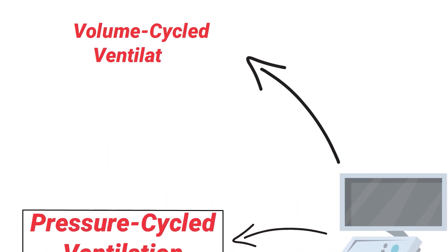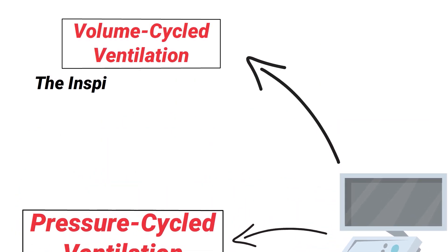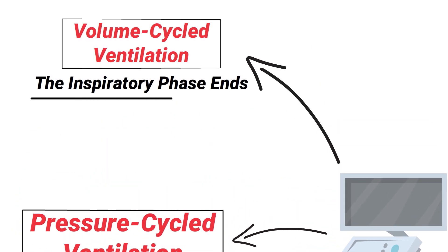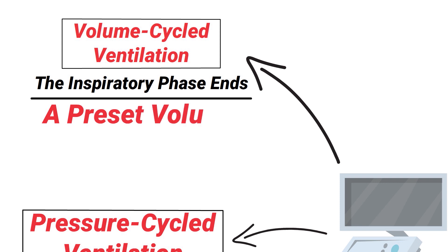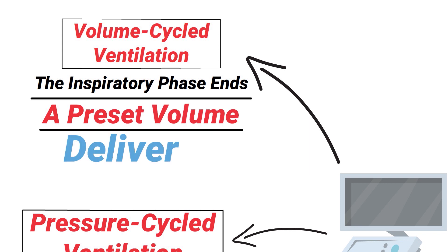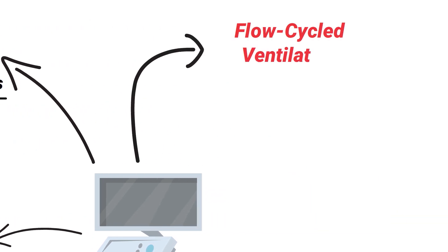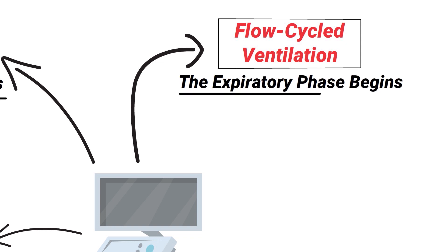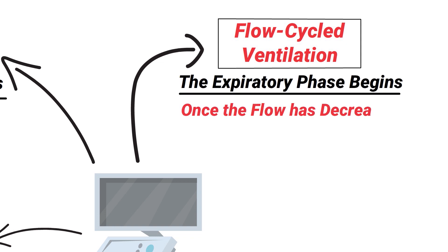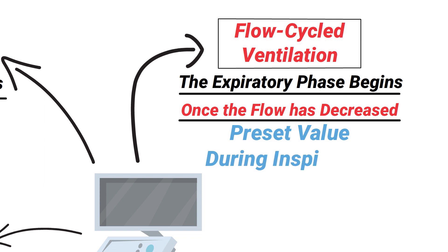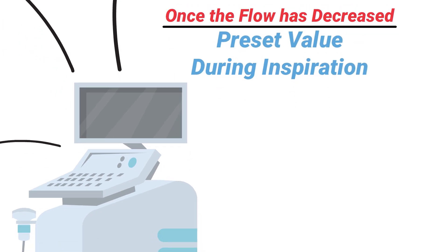During volume cycle ventilation, the inspiratory phase ends whenever a preset volume has been delivered. During flow cycle ventilation, the expiratory phase begins once the flow has decreased to a preset value during inspiration.